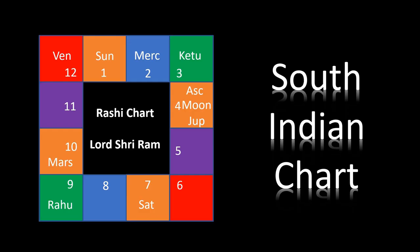Hi there, this is Mahesh here and welcome to the Celestial Quest. In today's video we will take a look at the South Indian Rashi chart in Vedic Astrology. This Rashi chart is also known as birth chart, natal chart, lagna chart, or Rashi chakra. The South Indian chart is also known as Jupiter square chart.